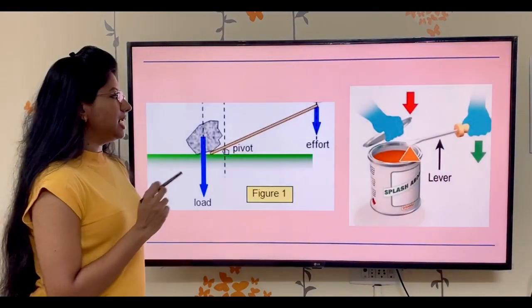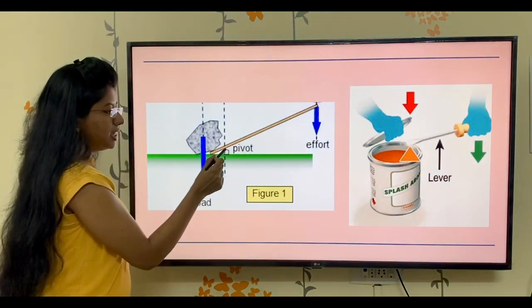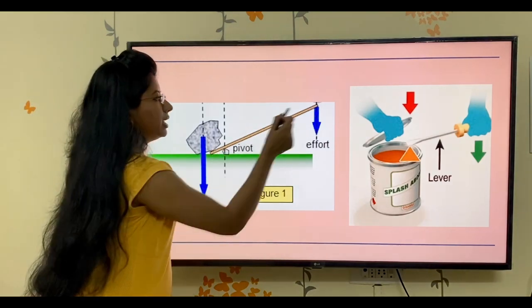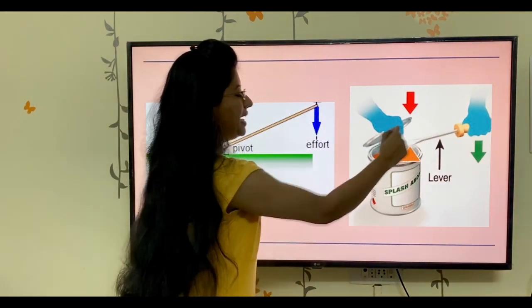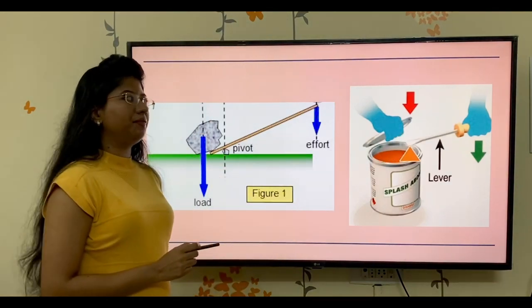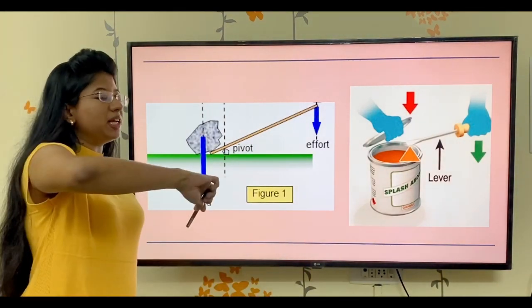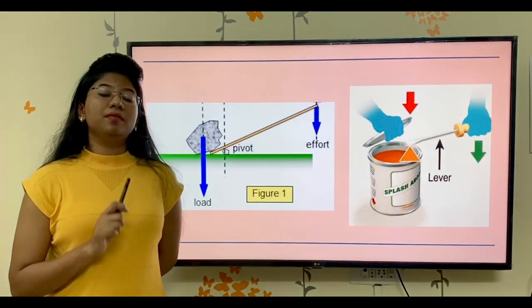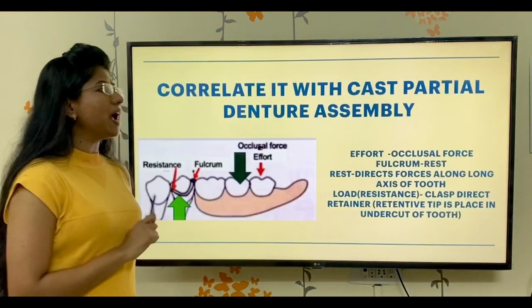Now we can see another example. The load is here, this is the effort arm. You can see the distance from the fulcrum to the load is less, and the distance from the fulcrum to the effort is more, so this is lifted very easily. The second example is a paint container. The lid is the load, the point at which the screwdriver is placed is the fulcrum, and the handle we are holding is the effort. So we are putting the effort to lift that lid, and in that way we get a mechanical advantage with less effort — this is first order lever.